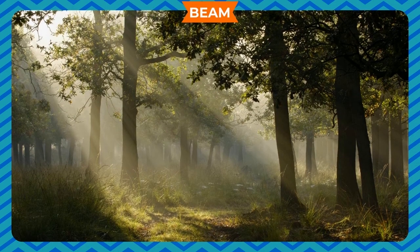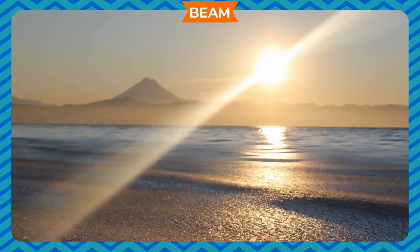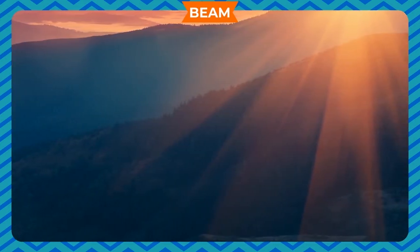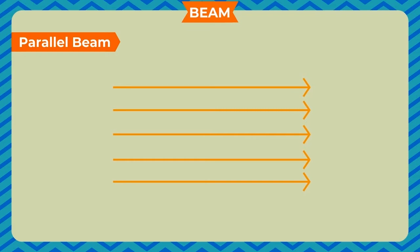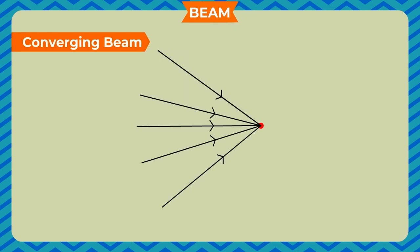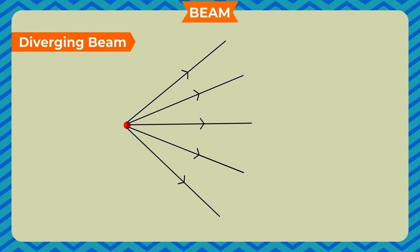Beam. A light source emits light in different directions. All the rays of light together form a beam of light. The intensity of a beam is higher than that of a ray. Beams of light are of many types. Parallel beam — when the rays of light are parallel to each other; for example, a parallel beam of sunlight incident on a solar cooker. Converging beam — when the rays of light coming from different directions meet at a point, they form a converging beam. Diverging beam — when the rays of light coming from a point light source spread out in different directions, they form a diverging beam.